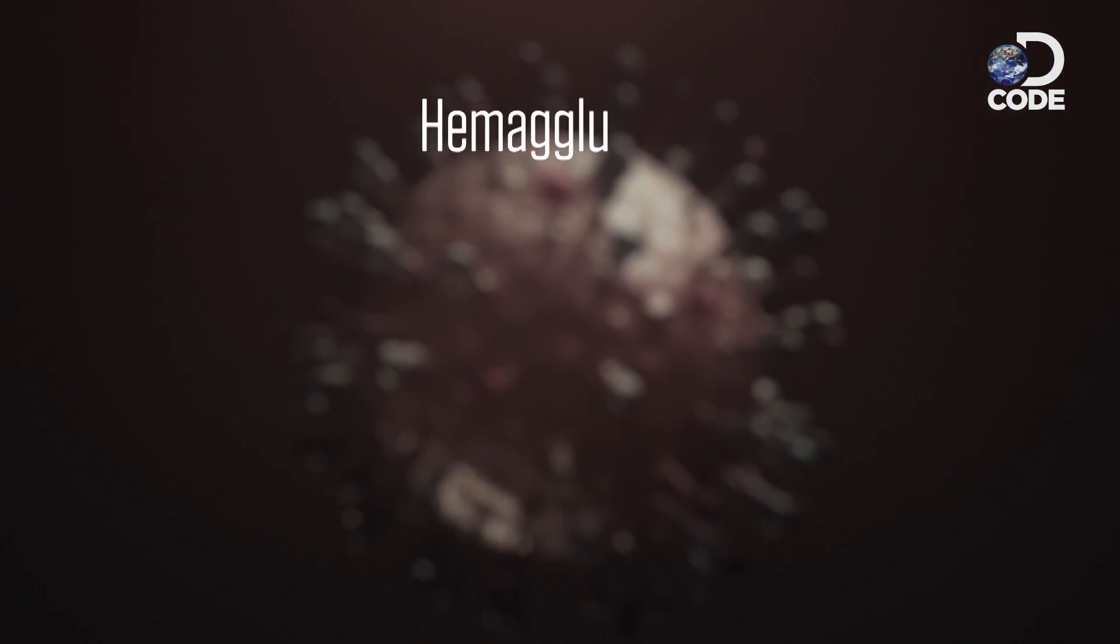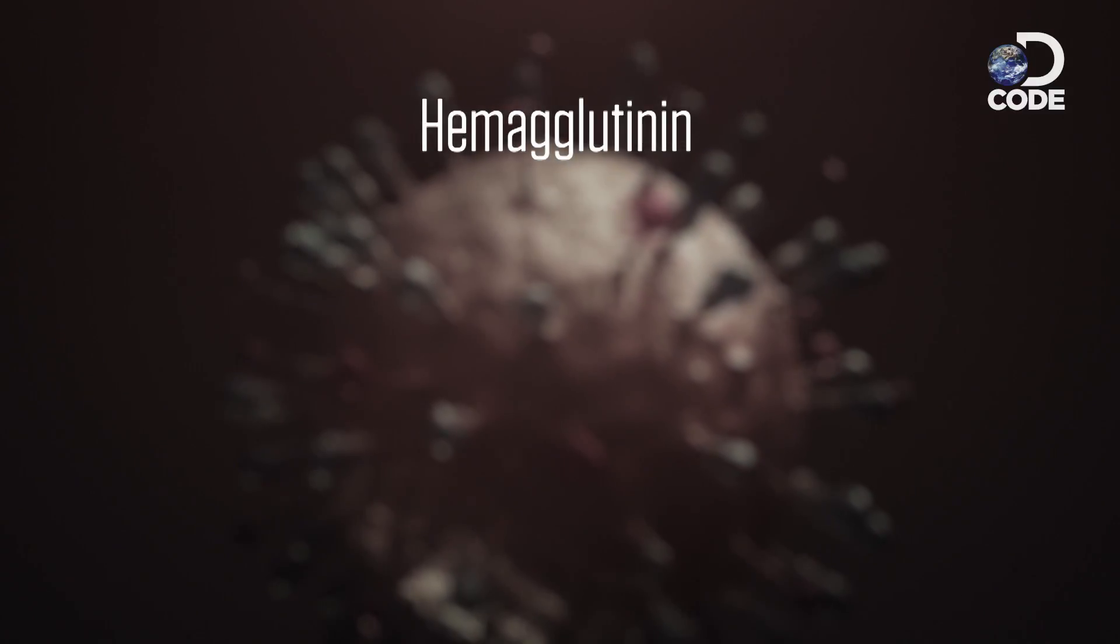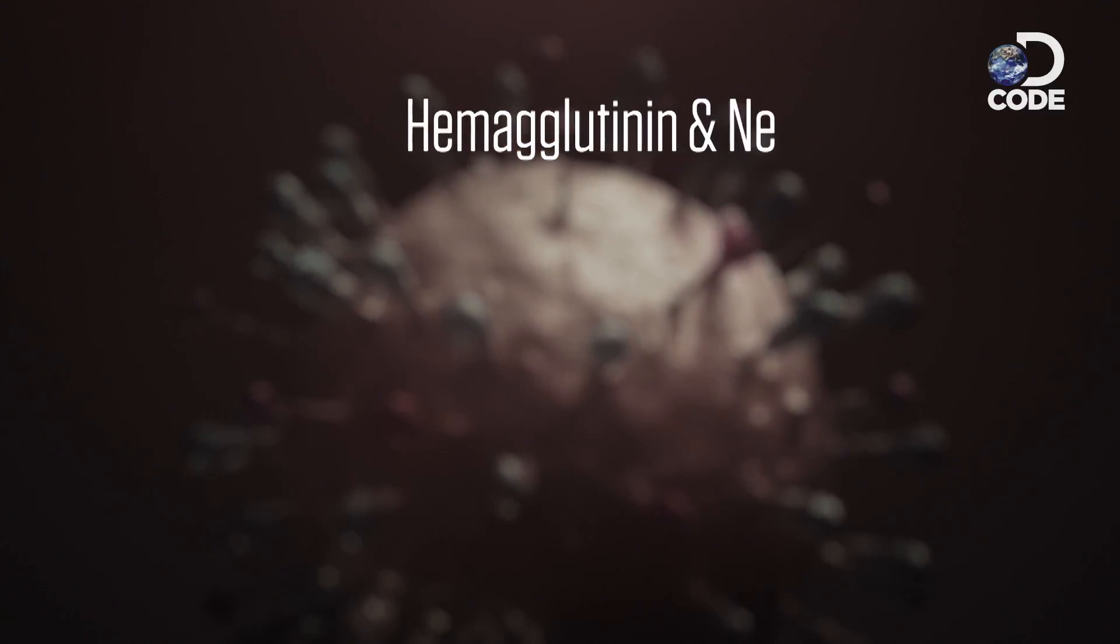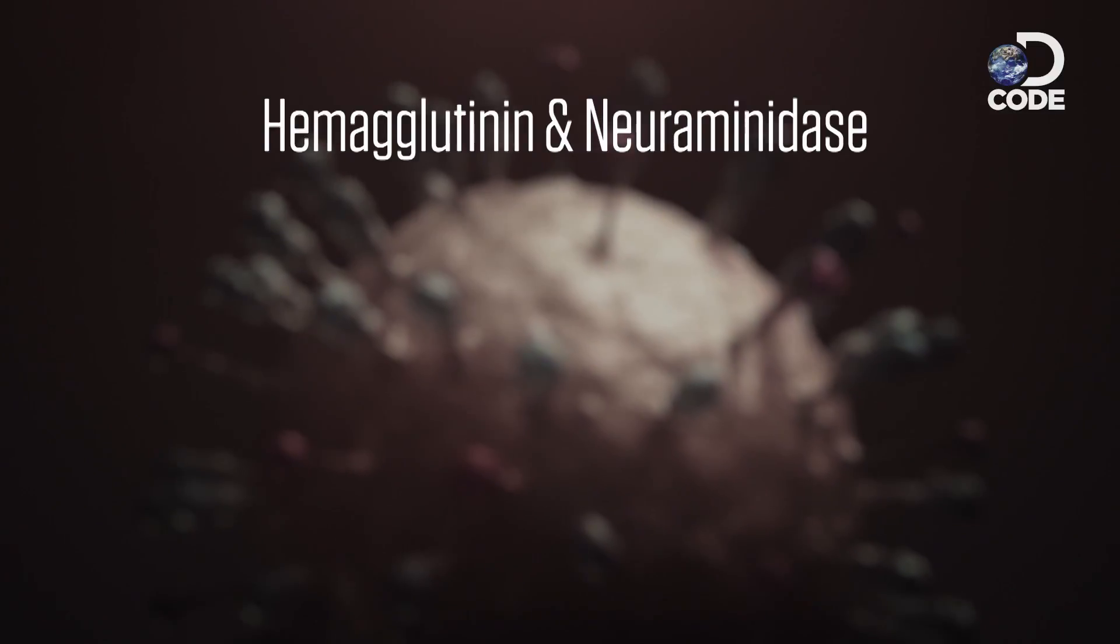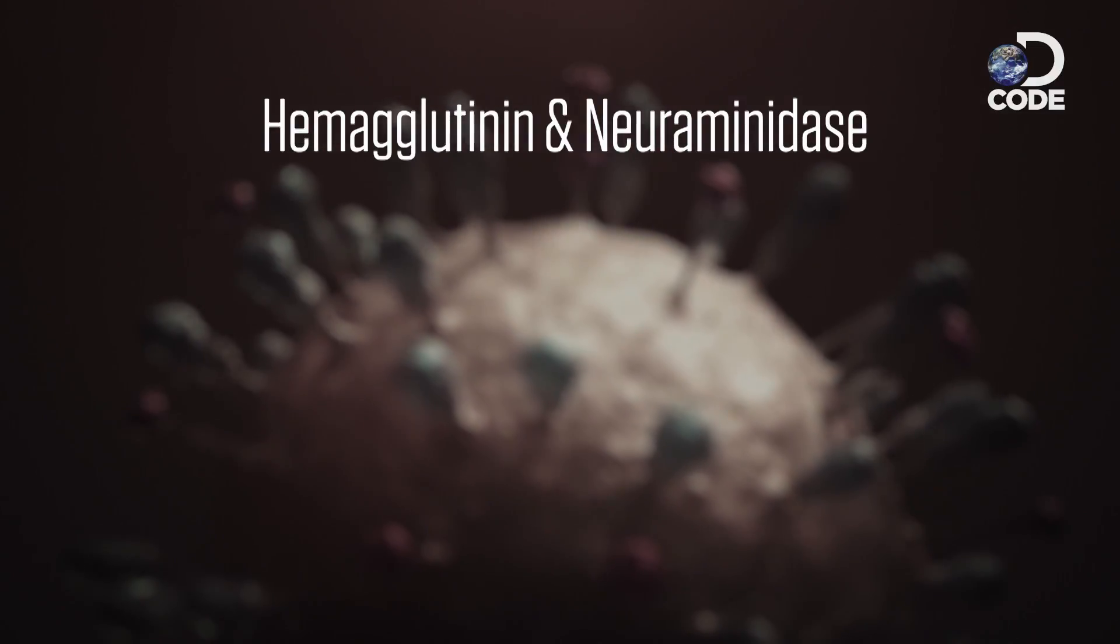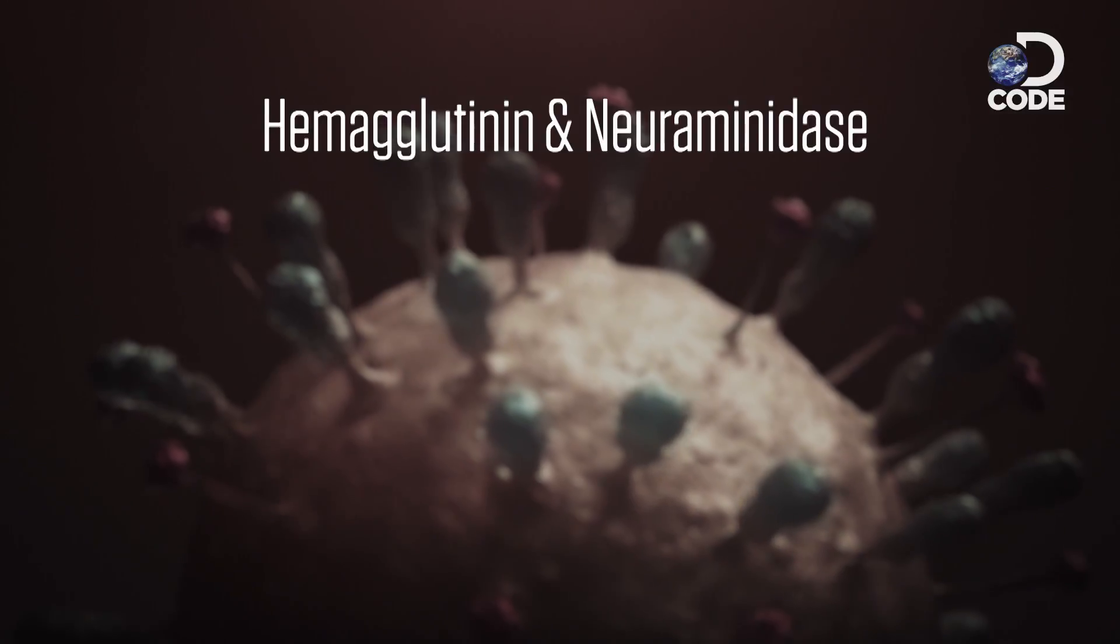One protein is called hemagglutinin. It allows the virus to get into the cells it wants to infect. And the other protein called neuraminidase has the opposite effect. It allows the virus to escape as newly made viruses are being released from cells.